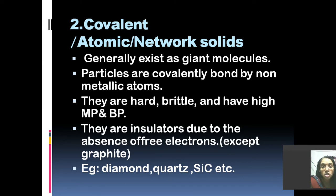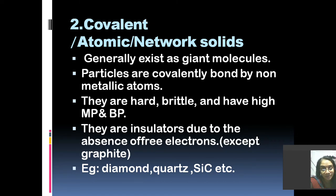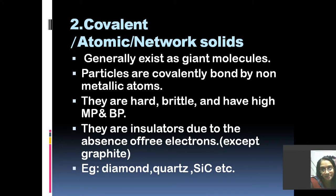The second type is covalent, atomic, or network solids. From the name itself you can make out that a covalent bond exists between the constituent particles, which are non-metallic atoms. They are also known as giant molecules because they form a networking structure. They are hard, brittle, and have high melting and boiling points, and they are usually insulators except in the case of graphite. Graphite has mobile electrons, hence it is a covalent but conducting crystal. Examples of normal covalent solids include diamond, quartz, and silicon carbide — the structure of diamond was studied last year in group 14.